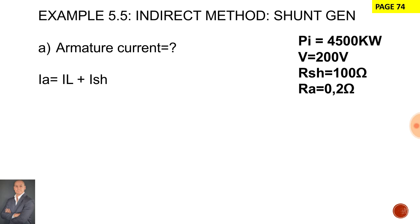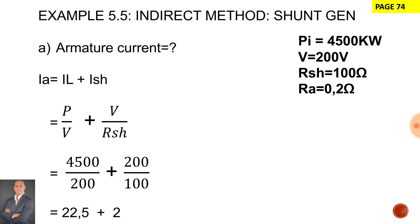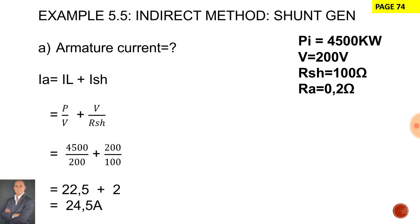To calculate the supply current we say power over voltage, and to calculate the shunt current we say voltage over the shunt resistance. The power is 4500 watts divided by the terminal voltage of 200. To calculate the shunt current it's 200 volts divided by the shunt resistance of 100 ohms. Therefore the supply current is 22.5 amps and the shunt current is 2 amps. If we add those together we get an armature current of 24.5 amps.